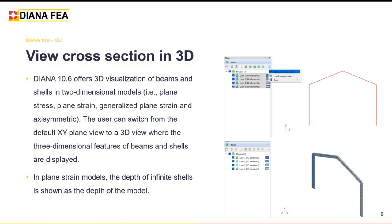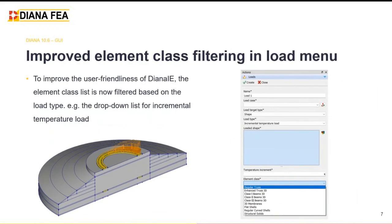In a plane strain model, the user can also see the thickness of infinite shells. The user experience has also been improved in the action menus. The filter for the element class list is now filtered based on the load type selected by the user, so the user no longer sees a long list of element classes but a reduced, relevant set. This helps speed up modeling and reduces the possibility for the user to make mistakes.